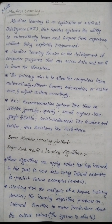Examples of machine learning include recommendation systems like those in Netflix, YouTube, and Spotify; search engines like Google and Baidu; social media feeds like Facebook and Twitter; and voice assistants like Siri and Alexa.